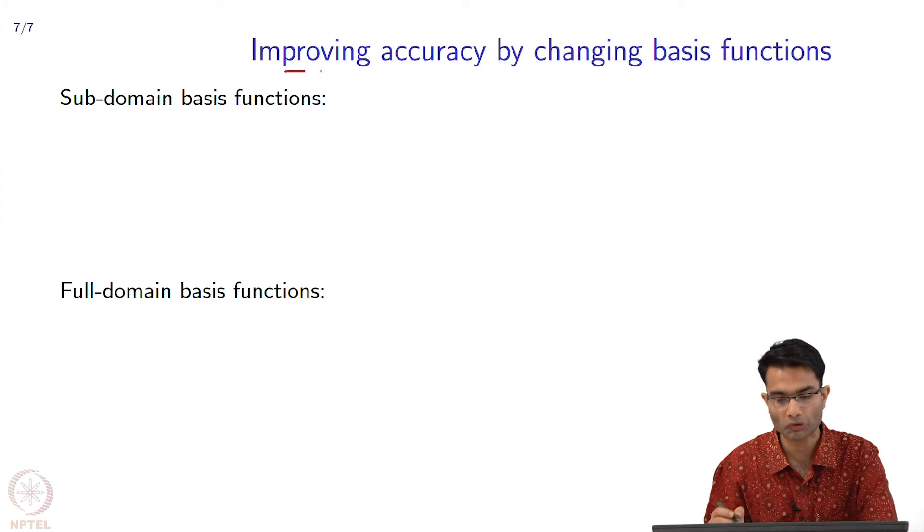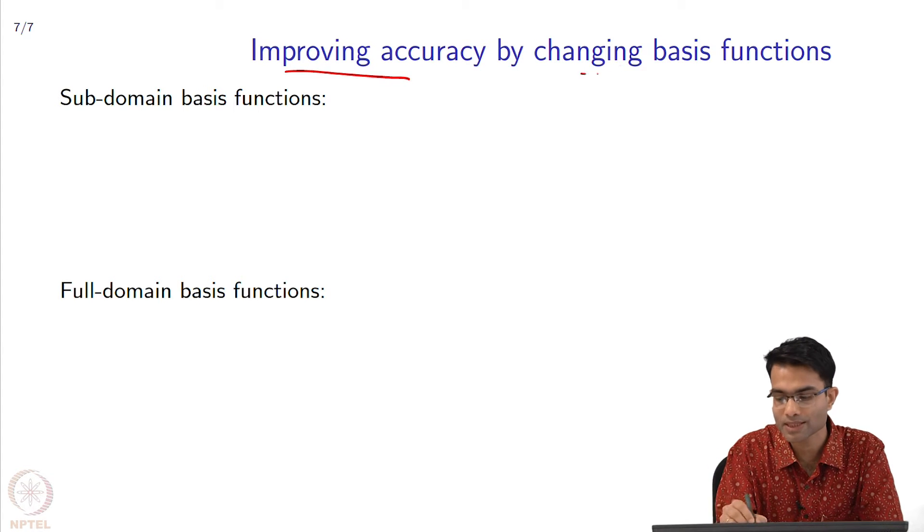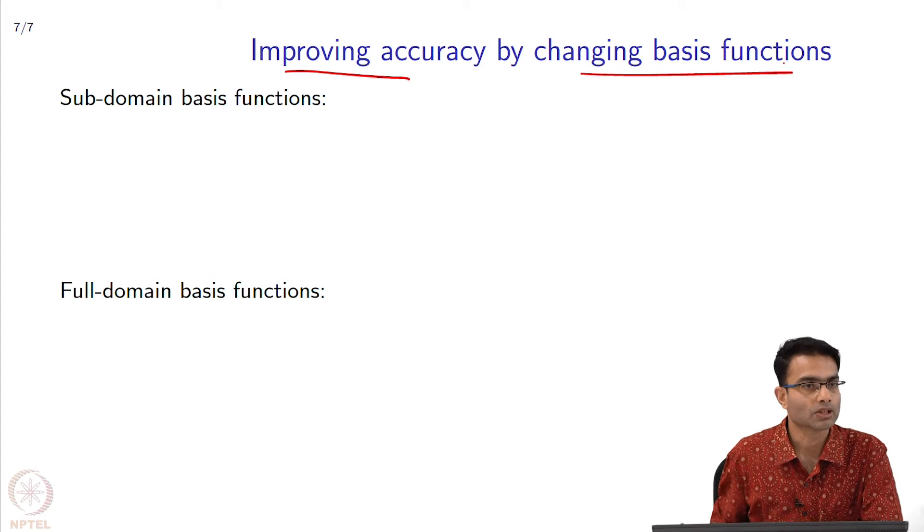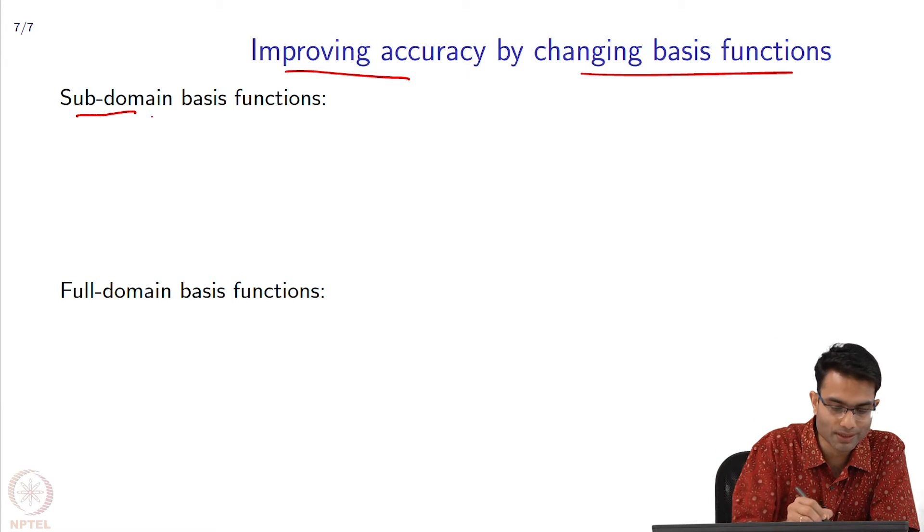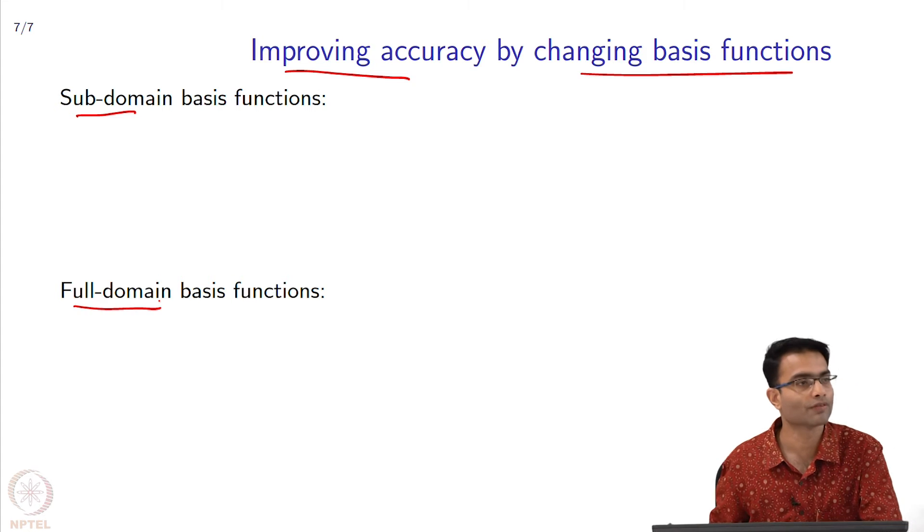That brings us to the final discussion on improving accuracy by changing the basis functions. When we talk about basis functions, there are broadly two classes: one are called sub-domain and the other are called full-domain.